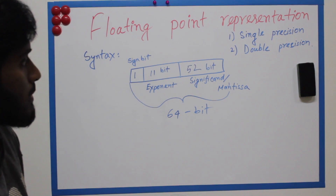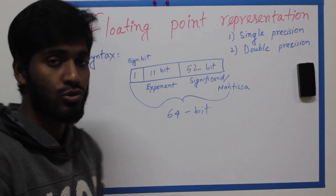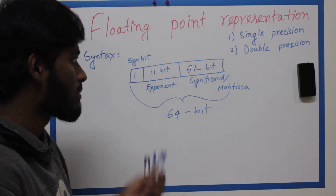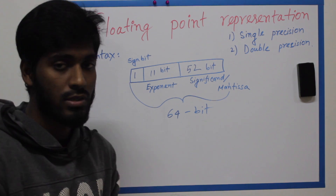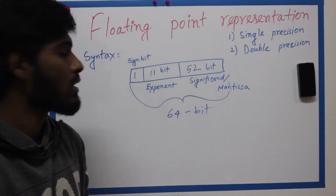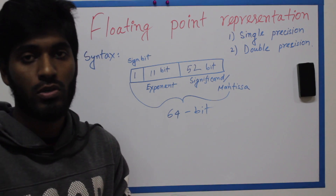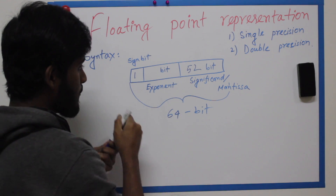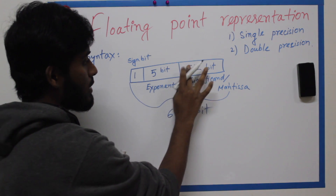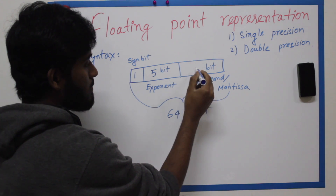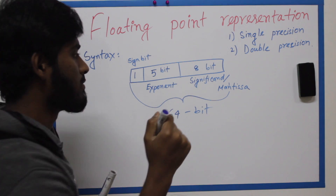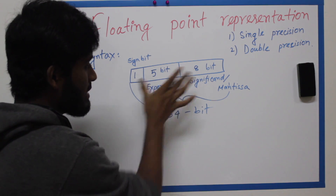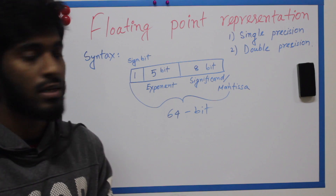Now we are going to start doing example videos. We are going to work with a simplified format because we don't have the full 32 bits and 64 bits. Our study will use 5 bits for the exponent and 8 bits for the significant.